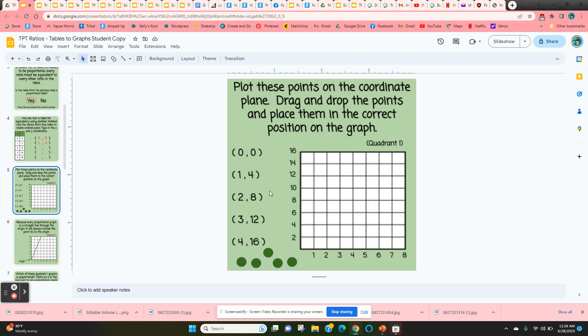Now all of those values are here on slide 5, so students are going to move these green circles. We're going to plot these points in this quadrant 1 graph. So if we plot the points, we'll see what we come up with. See if it's a proportional graph. If it's a proportional graph, well, it has to be a straight line through the origin.